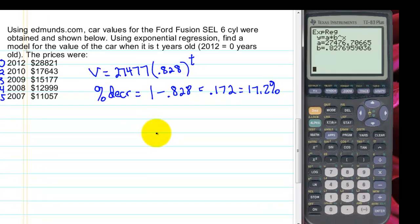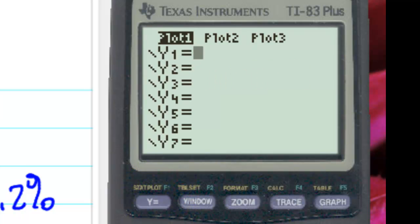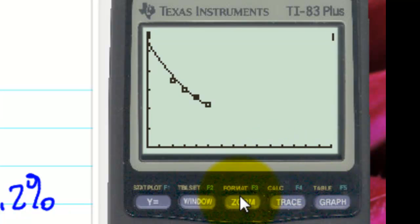If we wanted to look at this curve and see how it fits our data, we could plot this function into our graphing calculator. So in Y1, I'll enter our equation, 27,477, times our B, 0.828, raised to the X power. And we could press Graph. And we can see that it fits the data pretty well. A couple of the points are slightly off, and we can see our value.